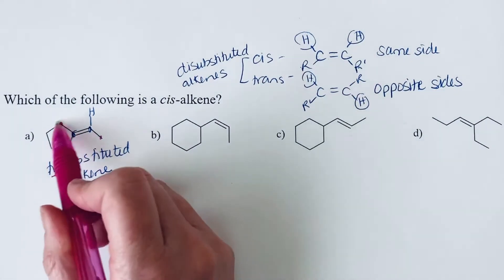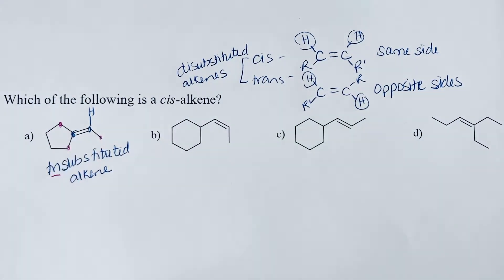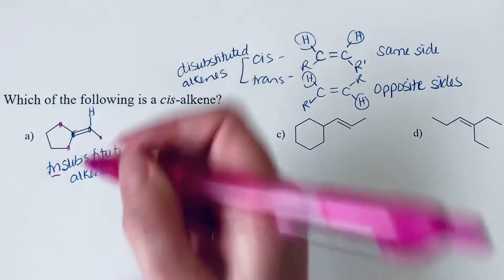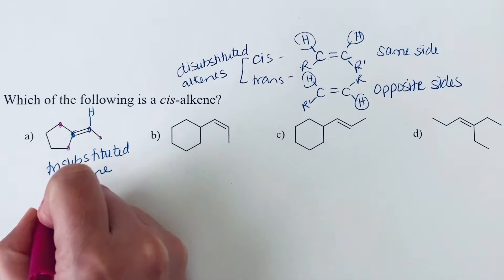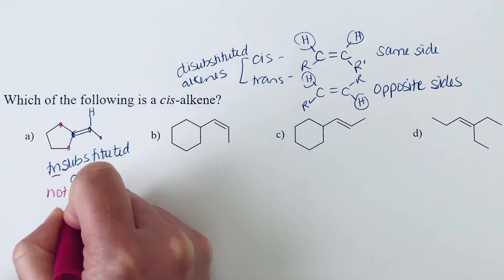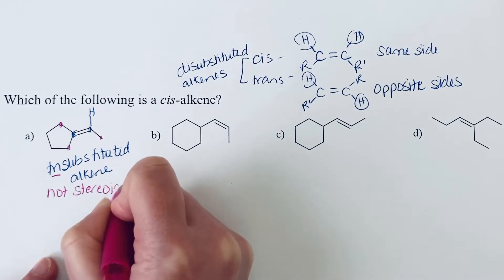And furthermore, we've got a symmetrical group here. So we don't actually have any stereochemistry with this alkene. If we were to switch two groups on either side of the alkene, we would end up with the same molecule.